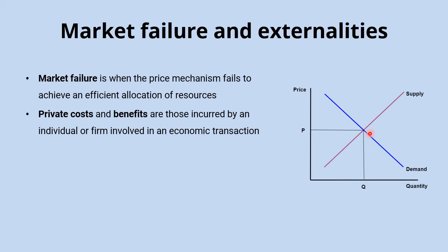To understand why, we need to understand the difference between private and external costs and benefits. Private costs and benefits are those incurred by the individual or firm involved in an economic transaction. When suppliers determine how much output to supply, they consider only their private costs — the cost to them as producers. When consumers decide how much to consume, they base that decision on their private benefits, the benefit to them individually from consuming that good.